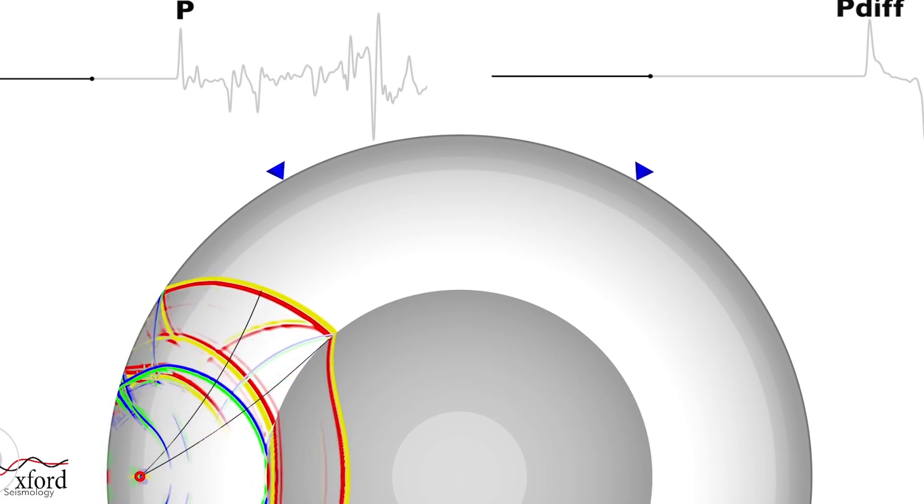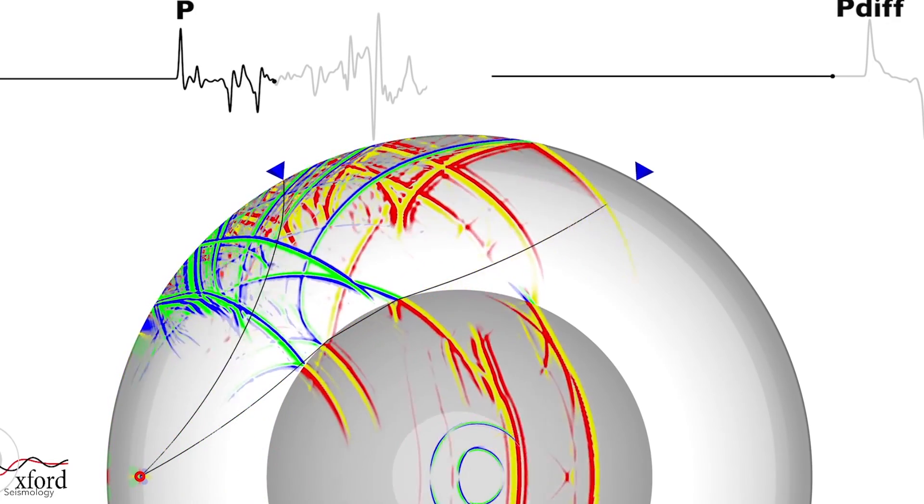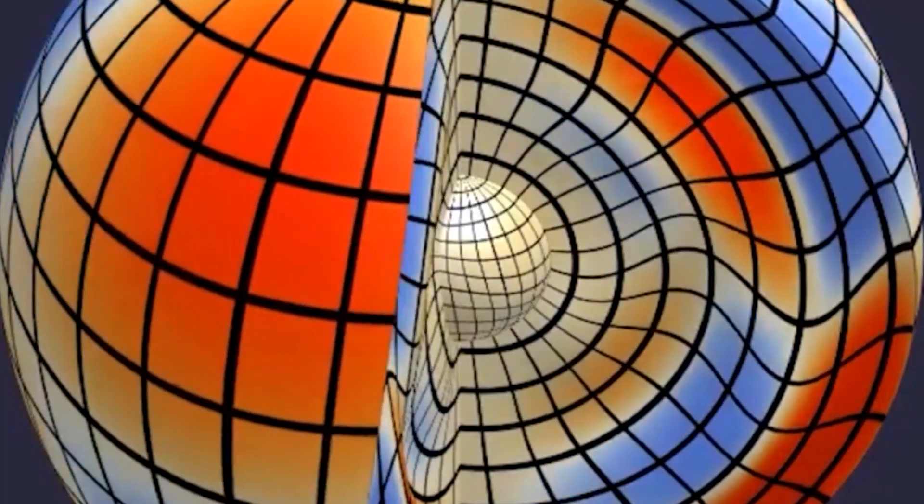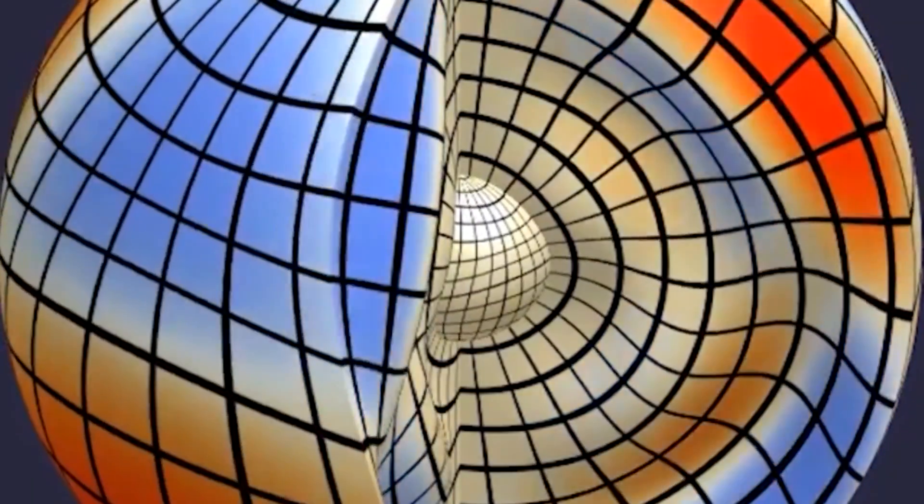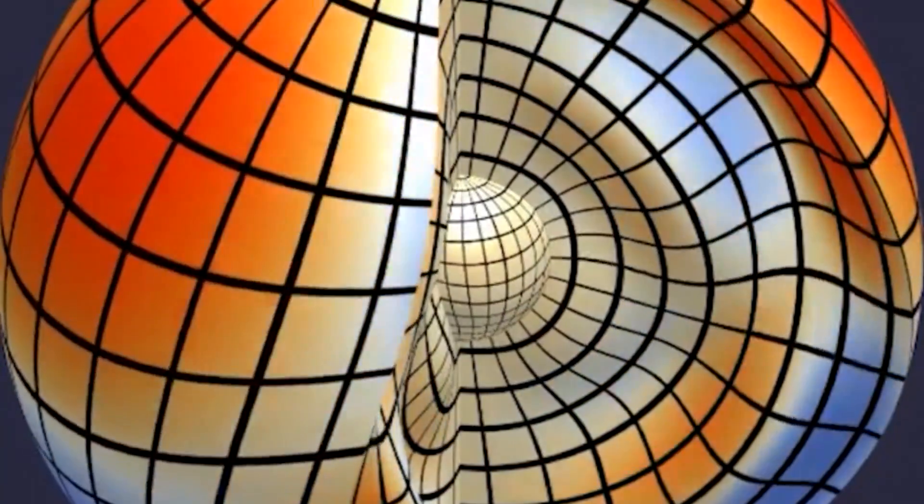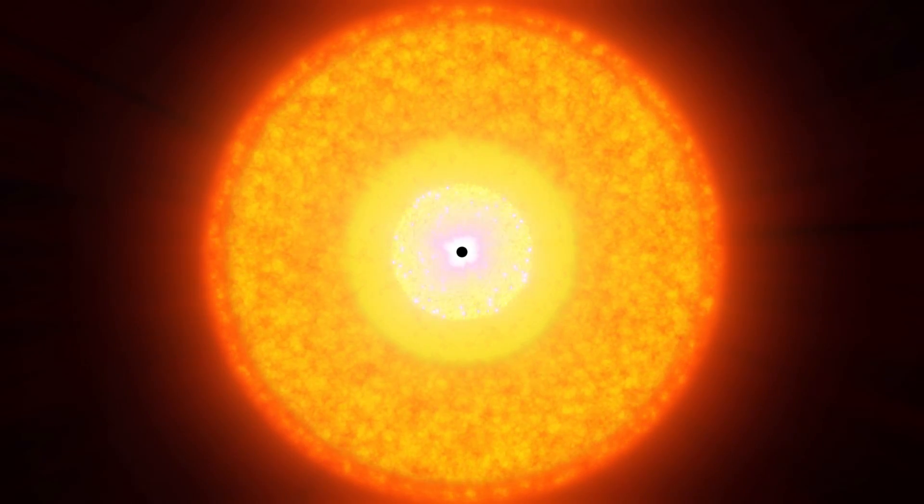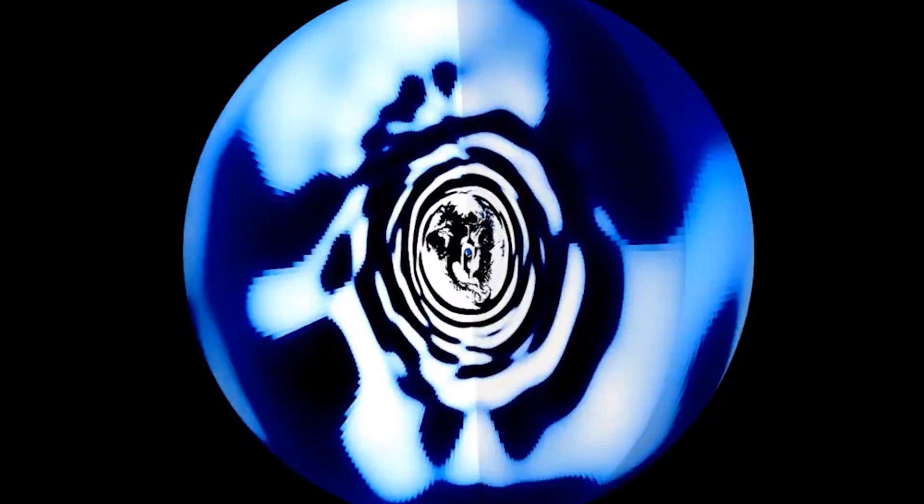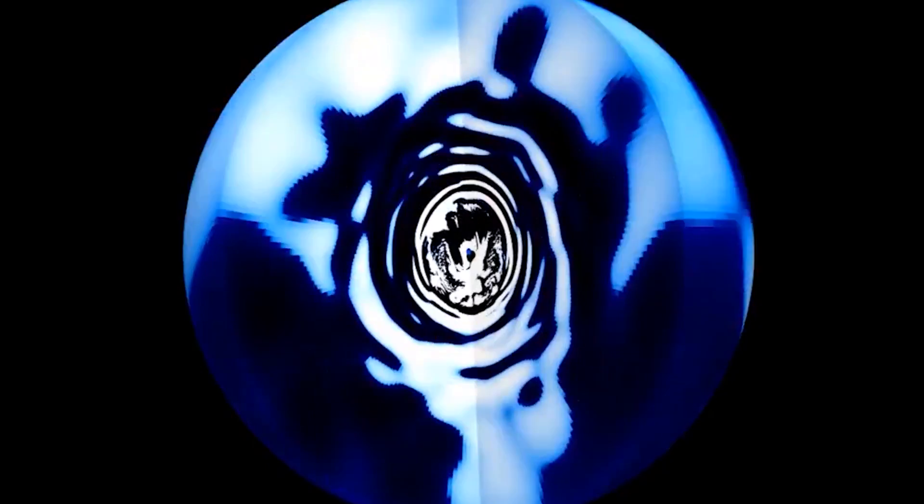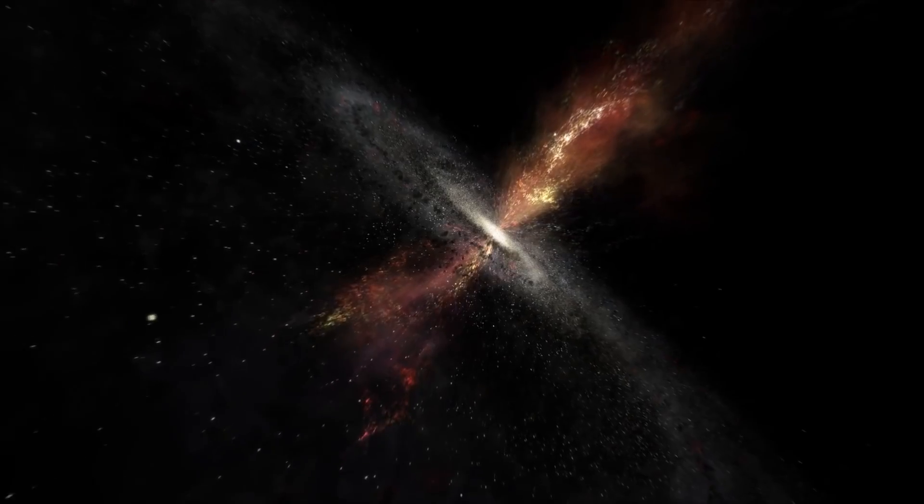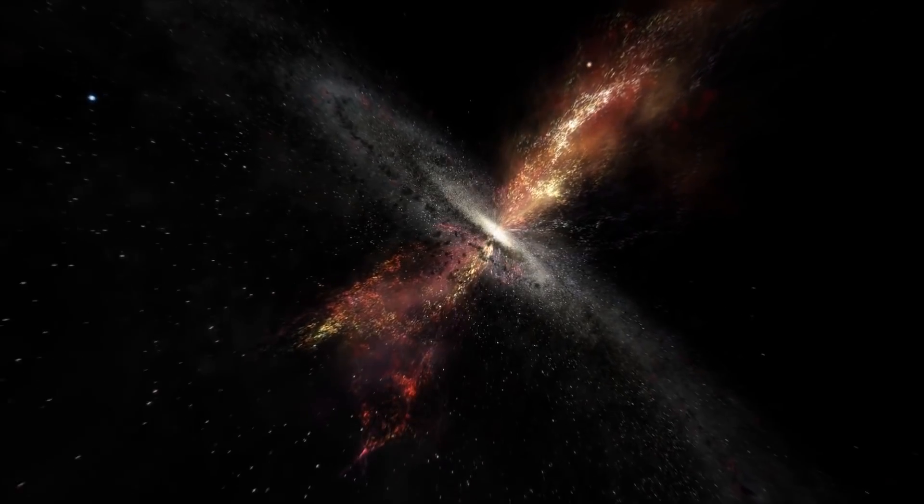Just as studying the propagation of seismic waves through the Earth's interior has allowed us to learn much about the structure of the Earth's depths, similarly, studying the propagation of similar waves in stellar material can help us peek into their interiors. And in particular, find out whether there are black holes there or not. However, the topic of astroseismology is interesting in itself, even unrelated to Hawking stars, so we might dedicate a separate video to this question.